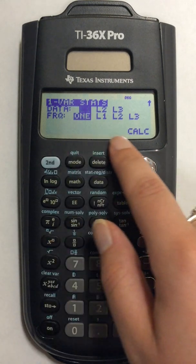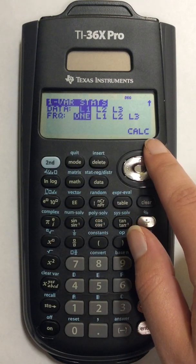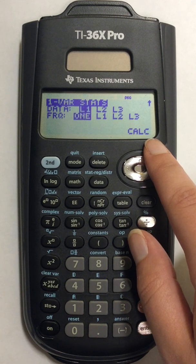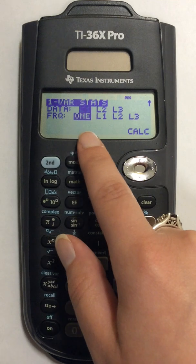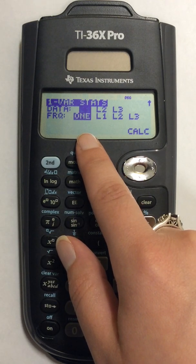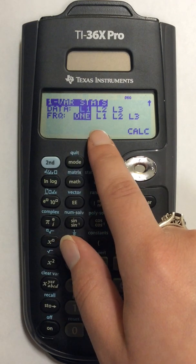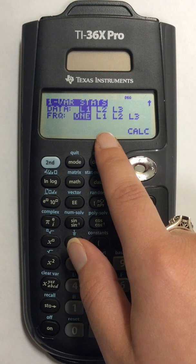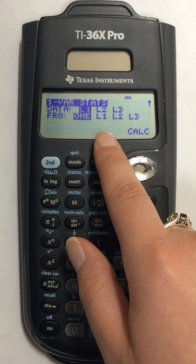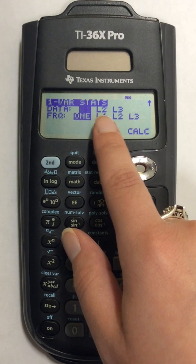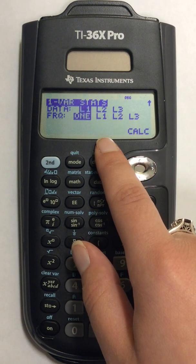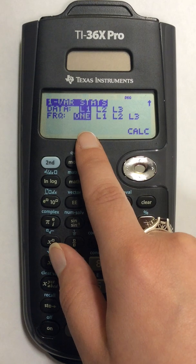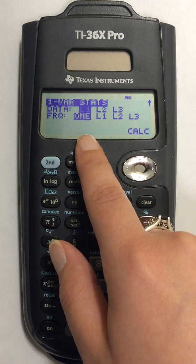This next screen allows me to choose the lists that I want to use in the calculation. For data, all of my numbers are in list one. If I used numbers in a different list I would make sure list two or list three were highlighted, but for right now I'm going to leave list one blue.